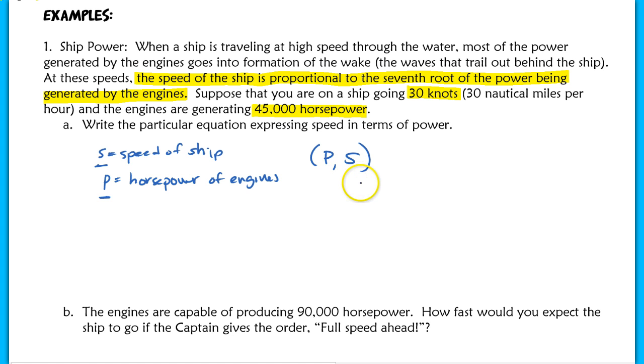This is definitely going to help us write our coordinate pair, but now we want to come up with a general equation too. So let's go back to the sentence that says the speed of the ship is proportional to the seventh root of the power. Now in this case, when it says is proportional, they're basically saying it's a direct variation. So speed of the ship, s, is directly varying, so is proportional means k times a power of your independent variable. So in this case, the seventh root of p.